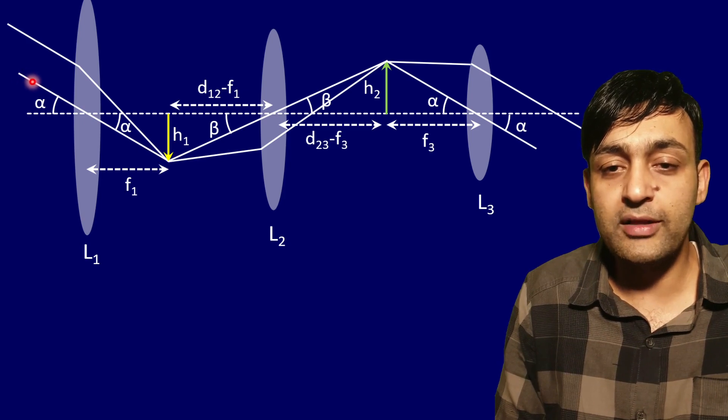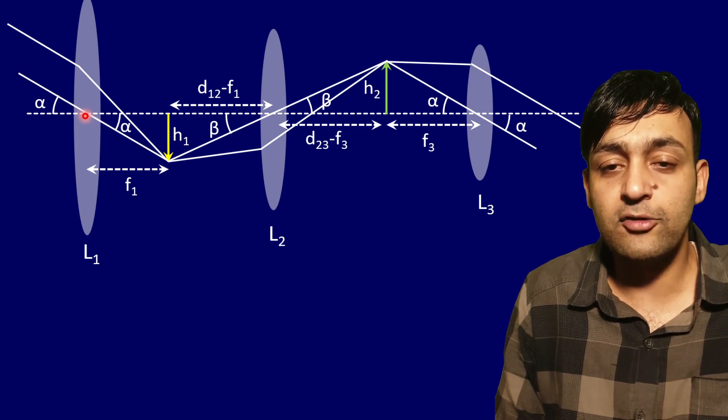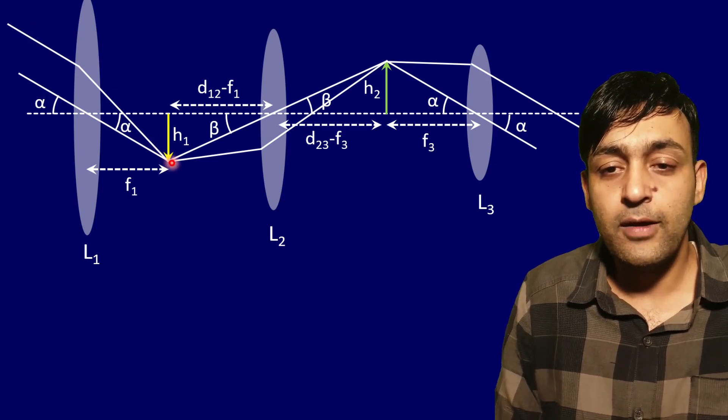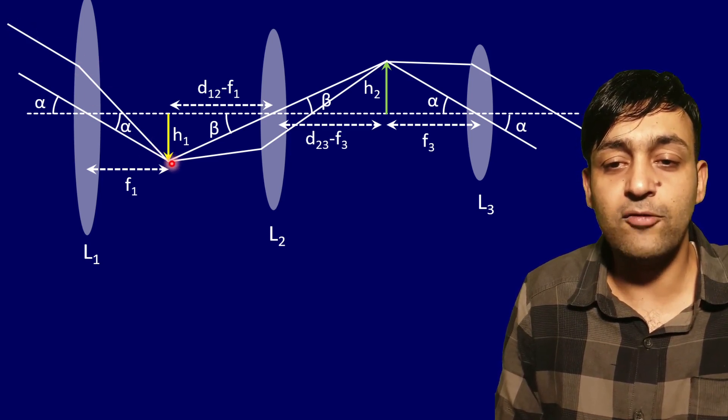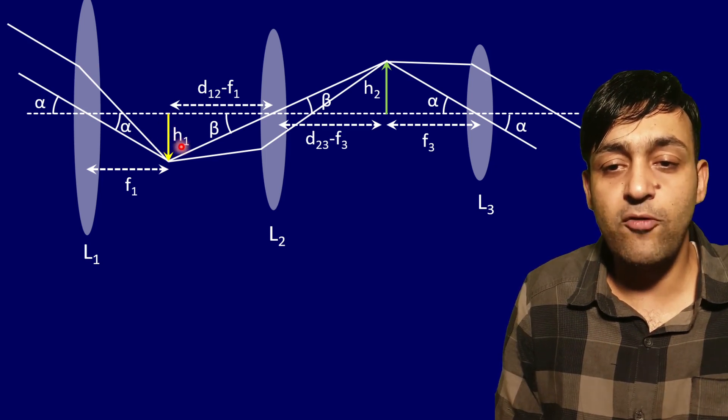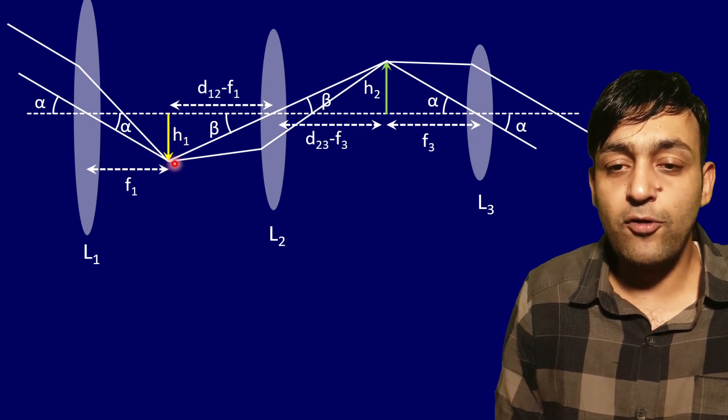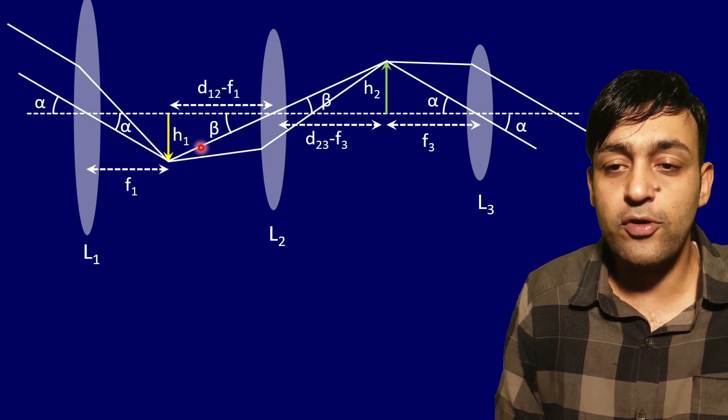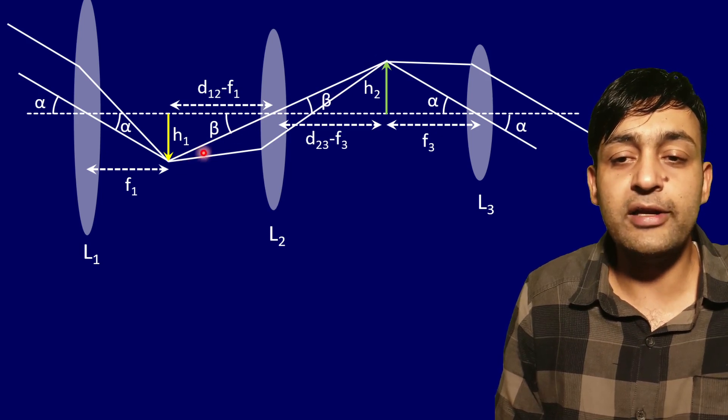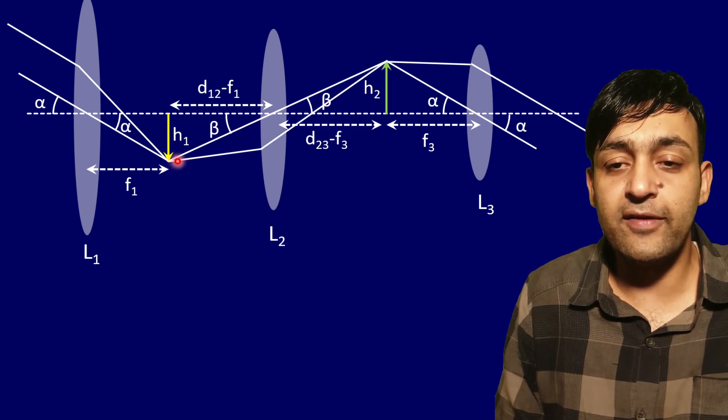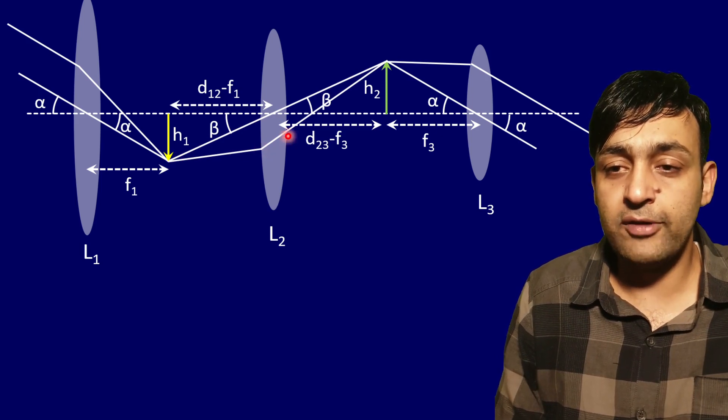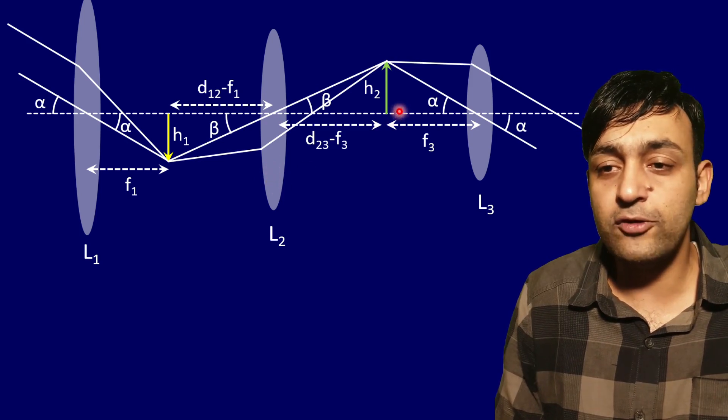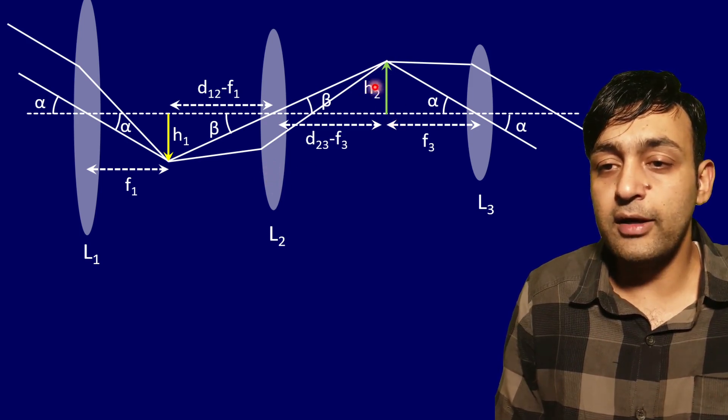One ray that is passing through the optical center goes undeviated and another ray after converging meets this point at the focal plane. We are getting an image of height h1. From this position, one ray goes through the optical center undeviated and another ray after being refracted meets here, meaning the image from lens L2 is forming here with height h2.